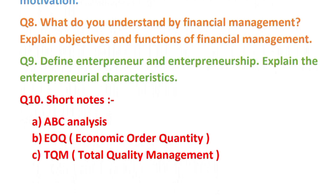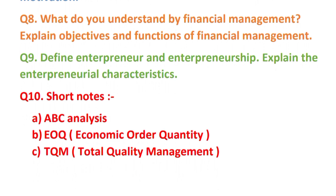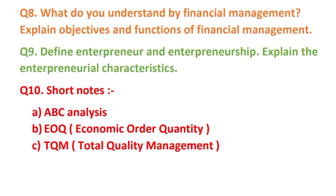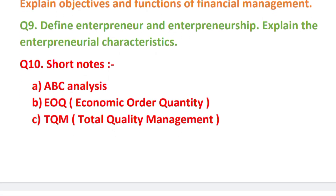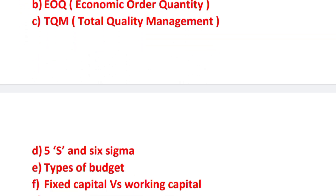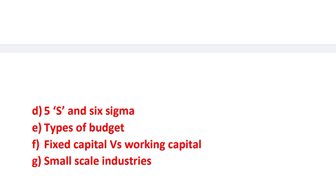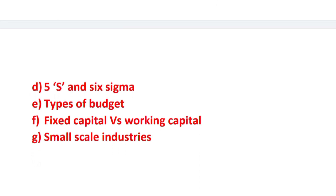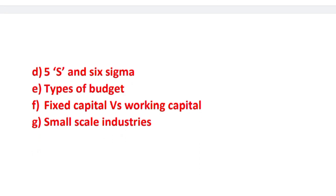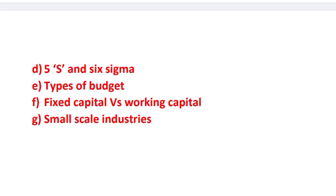In question number 10, we have to write short notes — and this can also be in the form of long questions. Topics include: ABC analysis, EOQ (economic order quantity), TQM (total quality management), 5S and 6S, types of budget, fixed capital versus working capital, and small scale industries.